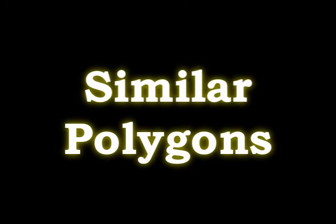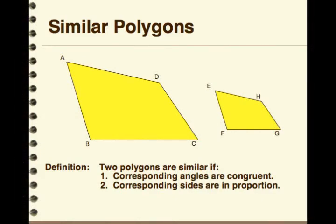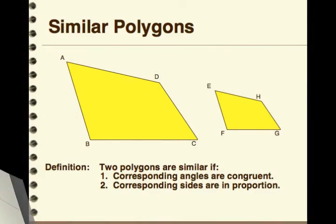Section 2. Objectives. Number 1, To Identify Similar Polygons. Number 2, To Apply Similar Polygons. Two polygons are similar if corresponding angles are congruent and corresponding sides are in proportion.